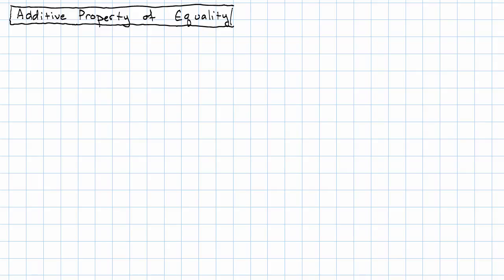So how can we get an equation that's equivalent to a given equation? One way we can get an equivalent equation is by adding the same number to both sides. Here's what I mean.